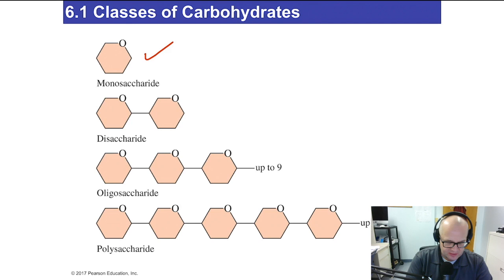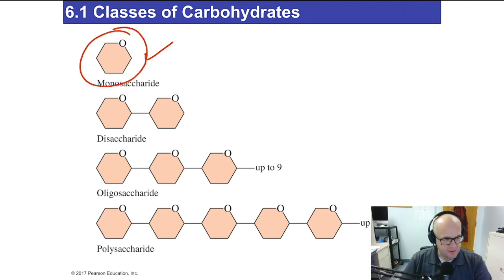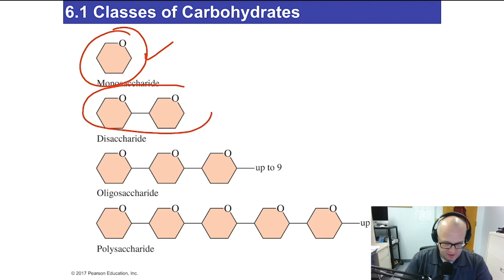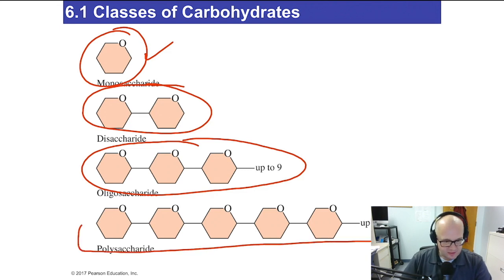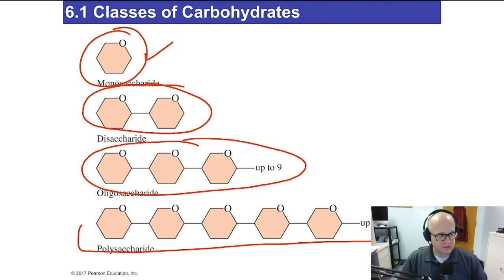Here's a monosaccharide — a single sugar unit — it's a six-membered ring with an oxygen in the right-hand corner. There's a disaccharide. There are also oligosaccharides — up to nine monomers joined together. And a polysaccharide can have up to 10,000 monomers or monosaccharides joined together — just to give you an idea of the scale. Ten thousand sugar units — that's a lot.